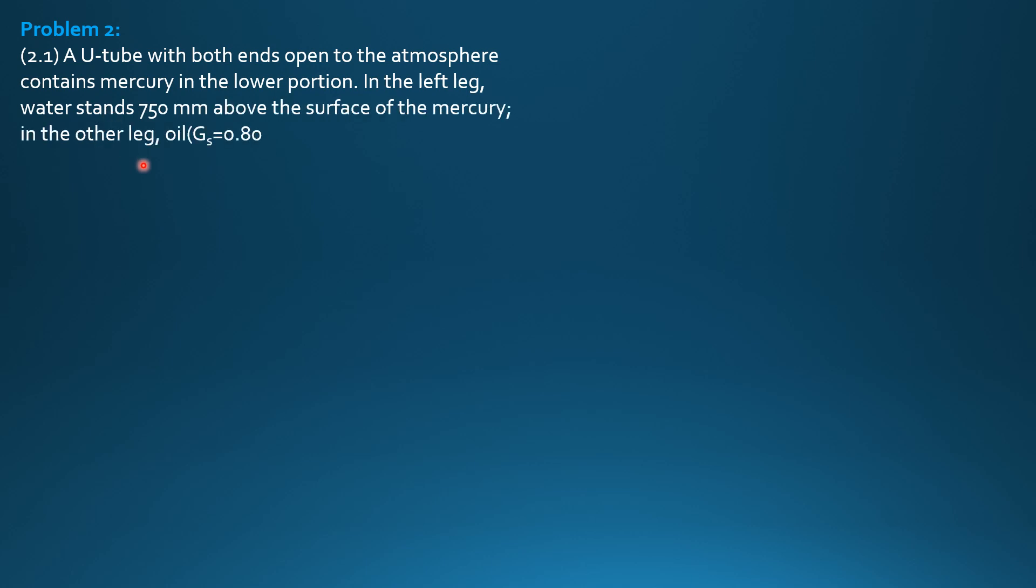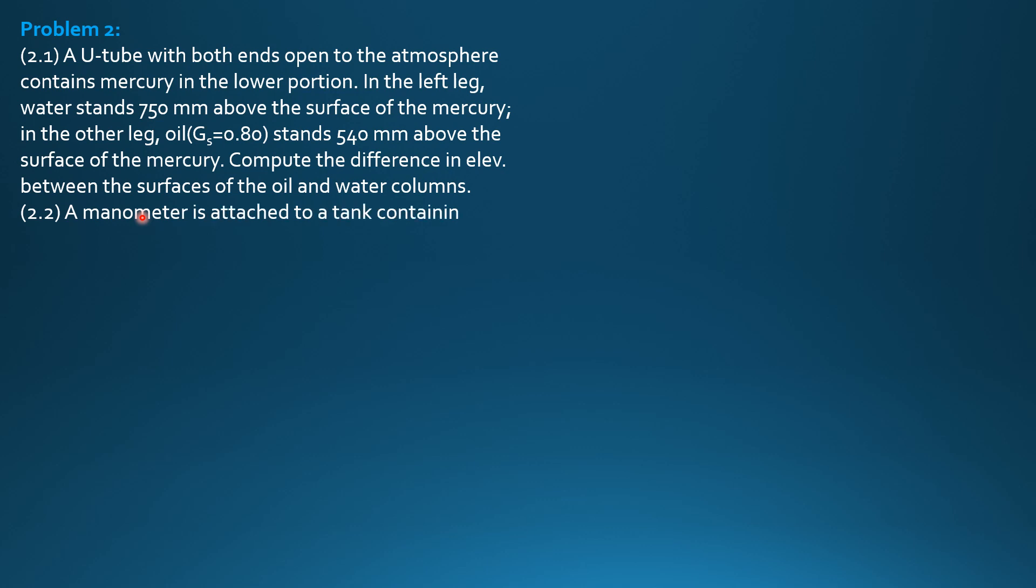In the left leg, water stands 750 mm above the surface of the mercury. In the other leg, oil of specific gravity 0.8 stands 540 mm above the surface of the mercury. Compute the difference in elevation between the surfaces of the oil and water columns.